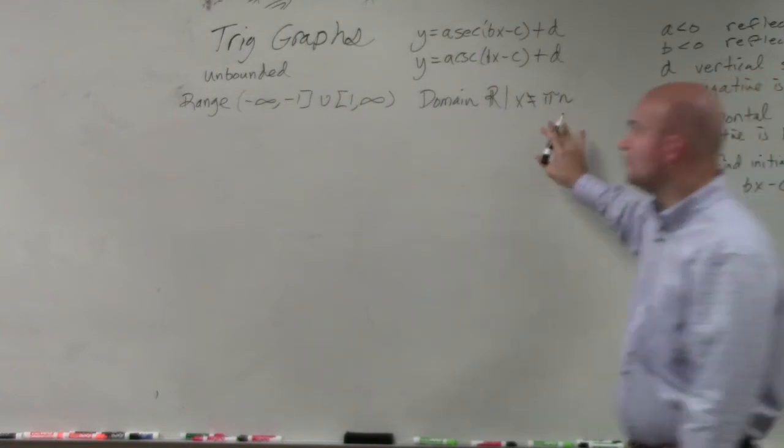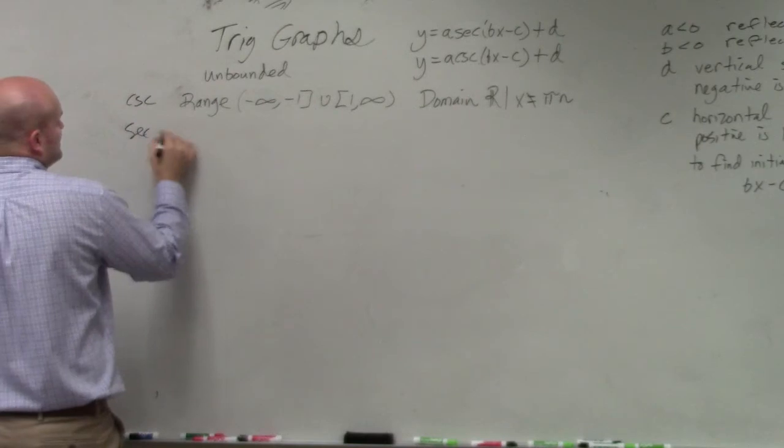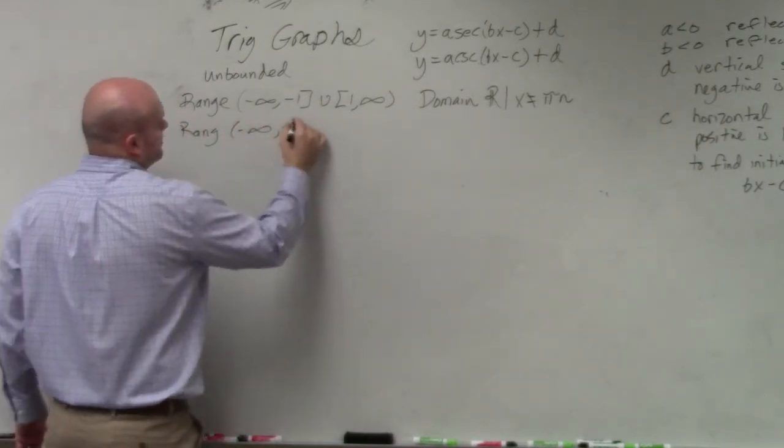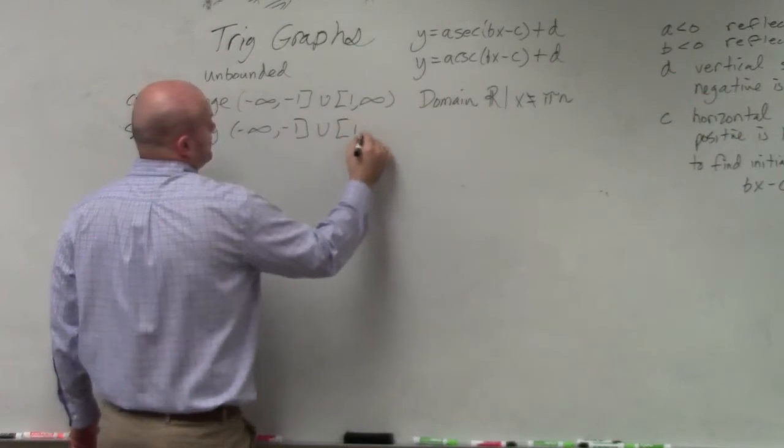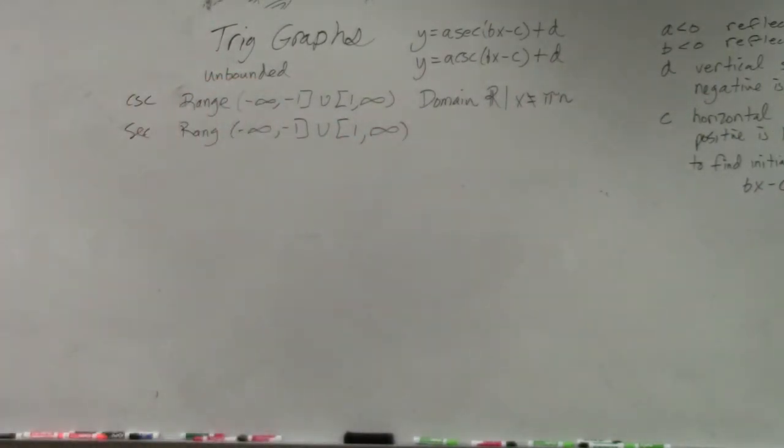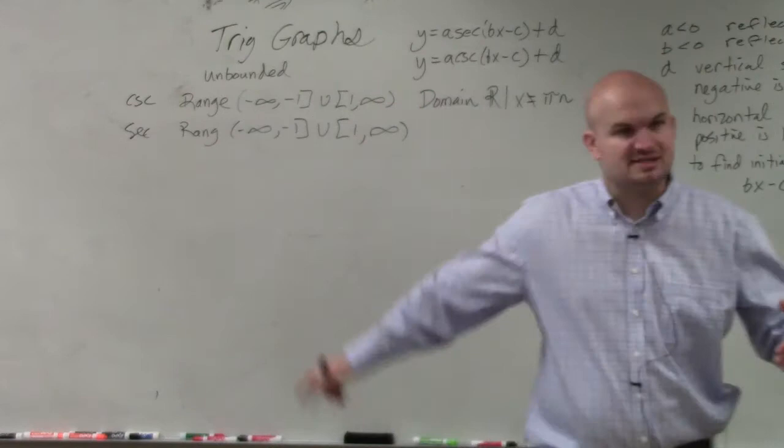So it's important that for cosecant, for secant, the range is exactly the same. But let's go and take a look at this graph a little bit differently. If I look at cosine, do you guys see how cosine starts being at 0 at a different value than sine?